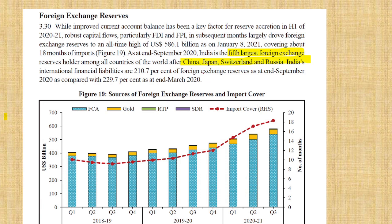Many people made a mistake regarding India's foreign reserves. India has the fifth largest foreign exchange reserves. The ranking is: first China, then Japan, Switzerland, Russia, and then India at fifth.